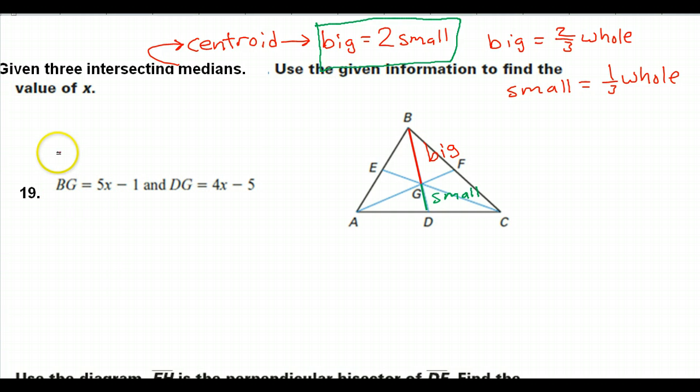We know that the big piece is double the small piece. The big piece is the 5x minus 1. So the 4x minus 5, that's the small piece, DG. The 5x minus 1, that's the big piece.